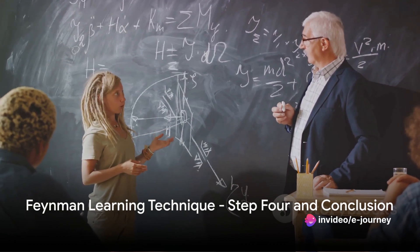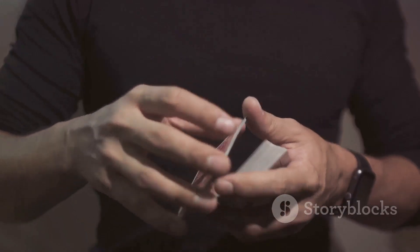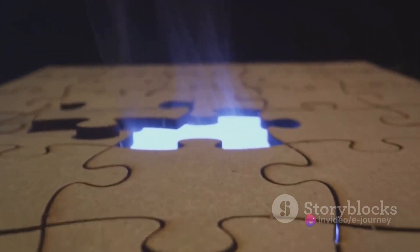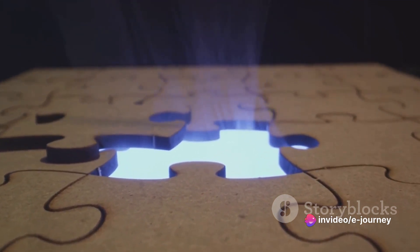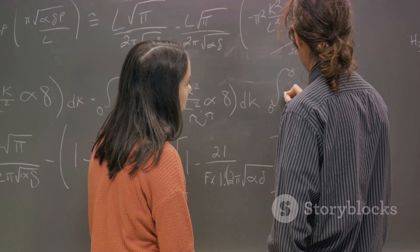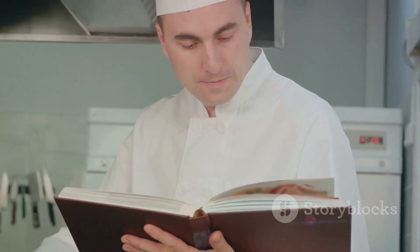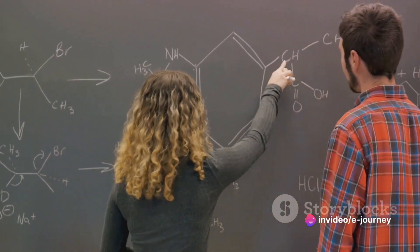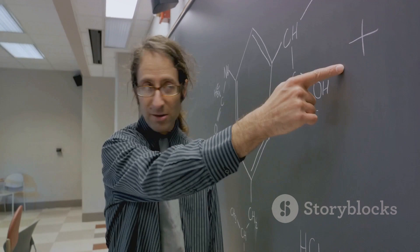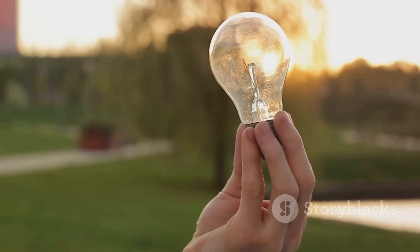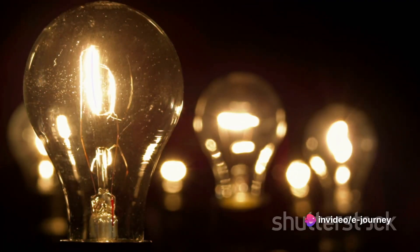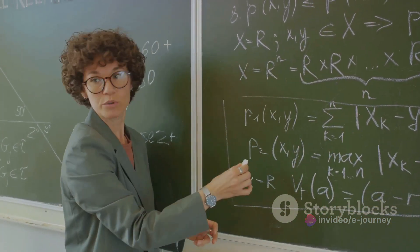The final step of the Feynman Learning Technique is to simplify and use analogies. This is where the real magic happens. The brain loves simplicity and familiarity. By breaking complex ideas down to their simplest forms and connecting them to things we already understand, we can create powerful mental hooks. For example, if you're trying to remember a complex formula, you could equate it to a recipe for your favorite cake — the ingredients and steps of the recipe serve as the elements of the formula, making it easier to remember and understand. This step is crucial not just for understanding but also for retention. It's one thing to understand a concept in the moment, but the ultimate goal is to hold on to that understanding for future use, and that's where simplifying and using analogies come into play.